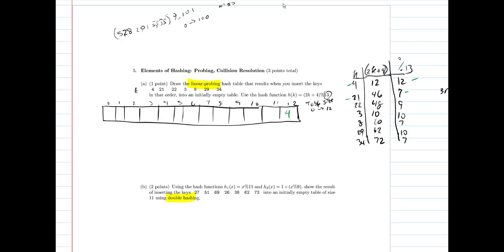21 would map into position 7, 22 into position 9, 3 into 10, 8 into 7. But we see that 7 was used previously, so there's a collision.